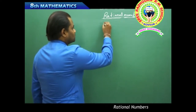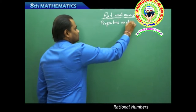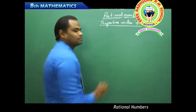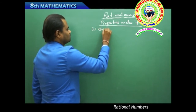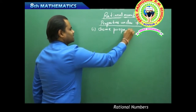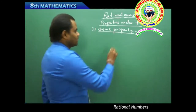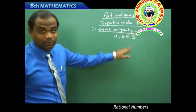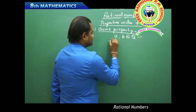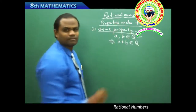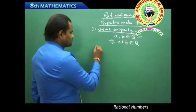In this session we'll discuss exclusively on rational numbers and their various properties. The first property under addition is the closure property. If a and b belong to Q, then a plus b also belongs to Q. The sum of two rational numbers is a rational number — this is the closure property under addition.